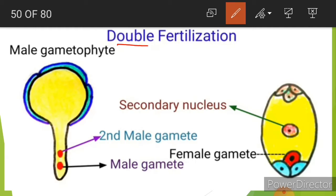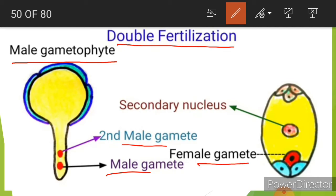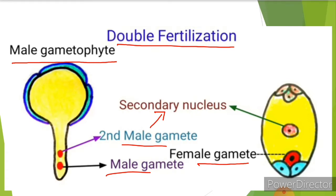In double fertilization, if you look at the male gametophyte, two male gametes are present. One male gamete fuses with the female gamete — that is, the egg cell — and the second male gamete fuses with the secondary nucleus. Both male gametes undergo fusion, which is why we call it double fertilization.